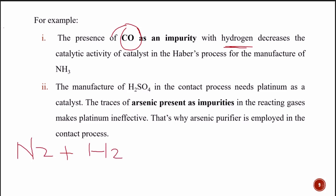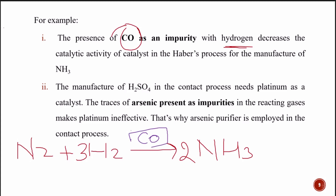In the Haber process we prepare ammonia: N2 + 3H2 → 2NH3. But if carbon monoxide is present as an impurity with hydrogen, it poisons the iron catalyst and decreases its catalytic activity.